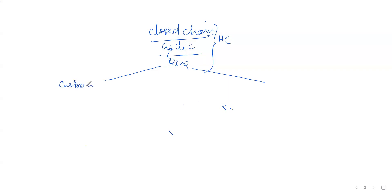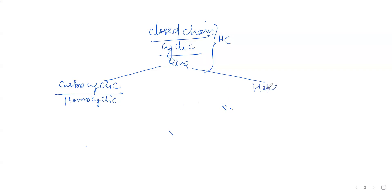Carbocyclic is also called homocyclic. The second type is heterocyclic. In heterocyclic compounds, the ring is made of atoms other than carbon as well. I'll give you just one example here.